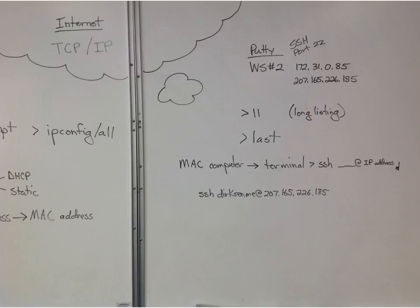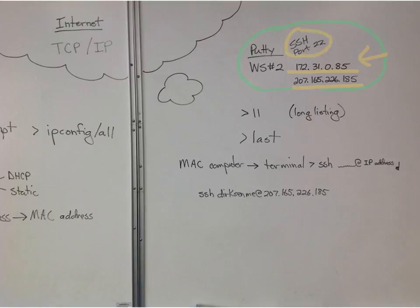So what we did in class, we took PuTTY and we logged in. In class we used the private address. If you were at home, you could log into the server using the public address — SSH port 22. You can download PuTTY. Make sure if you download PuTTY at home, get it from PuTTY.org. We downloaded PuTTY early in the class.